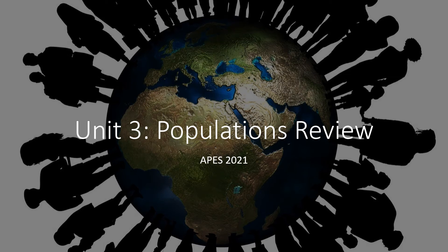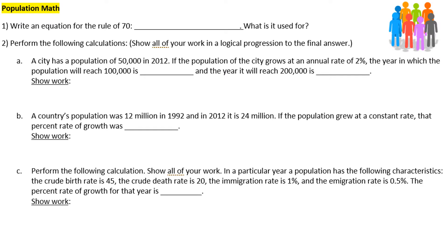Unit 3 populations review. Number one: write an equation for the rule of 70. The rule of 70 is simply 70 divided by the growth rate. This growth rate is a percentage, so if it says one percent, we use it as one and not change it to a decimal. It's counterintuitive, but that's the rule of 70.